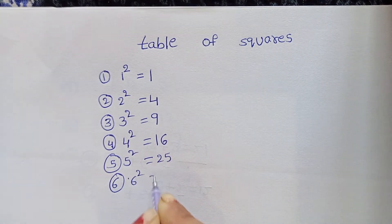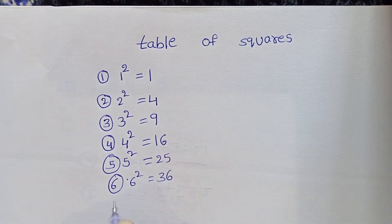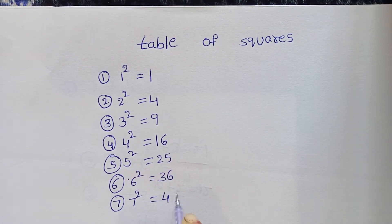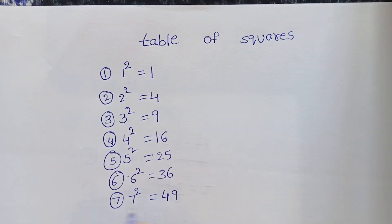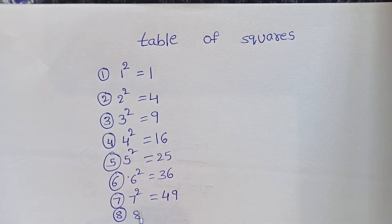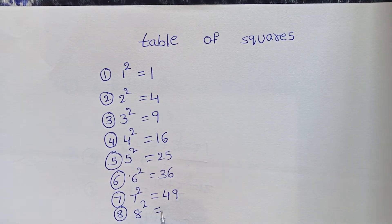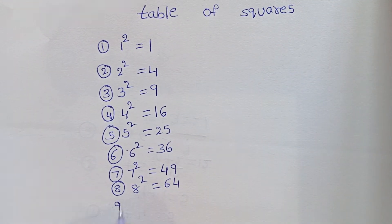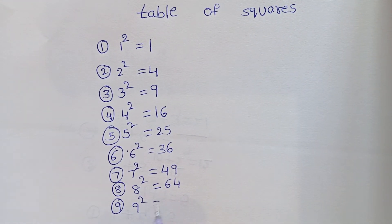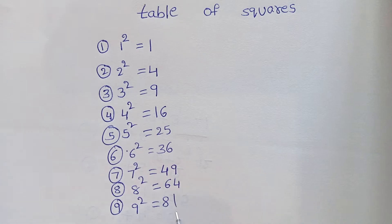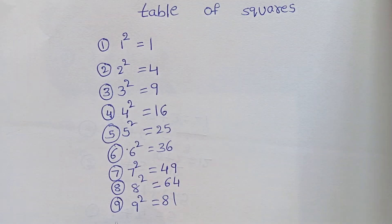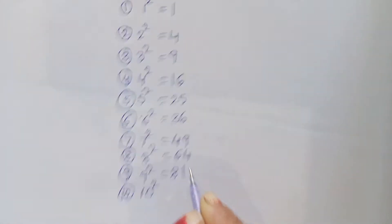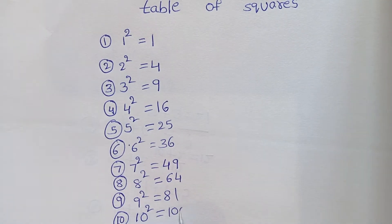Six square equals to thirty-six. Seven square equals to forty-nine. Eight square equals to sixty-four. Nine square equals to eighty-one. Ten square equals to hundred.